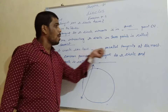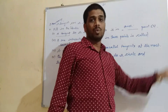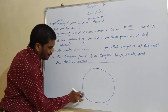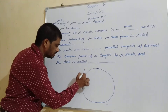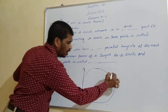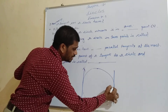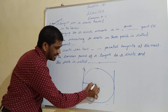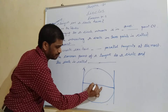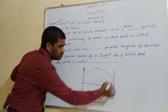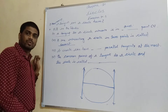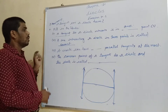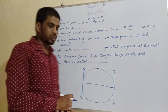A circle can have parallel tangents at most — how many? Only two, not more than two, because there are only two points where the tangent is perpendicular to the radius. So we can draw only these two parallel lines, and we cannot draw any third tangent parallel to them. So two parallel tangents we can draw at most.